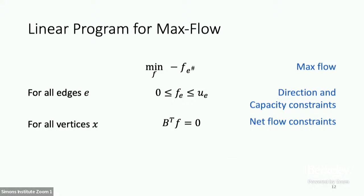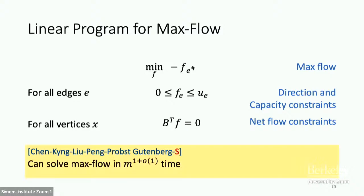This gives us a linear programming formulation for maximum flow. Over the space of all feasible flows — identified by direction and capacity constraints, and net flow constraints — you want to send the maximum amount of flow. Maximizing the flow on E-sharp is the same as minimizing minus of E-sharp. This is the standard linear program for maximum flow, and we give our main result: in almost linear time, we can solve this linear program and hence solve maximum flow.